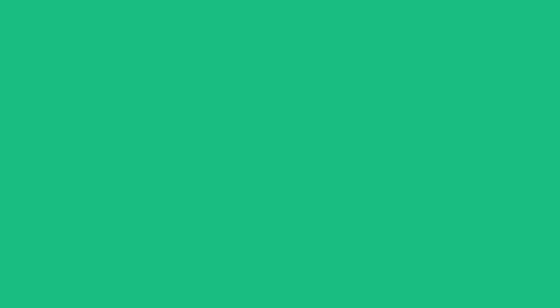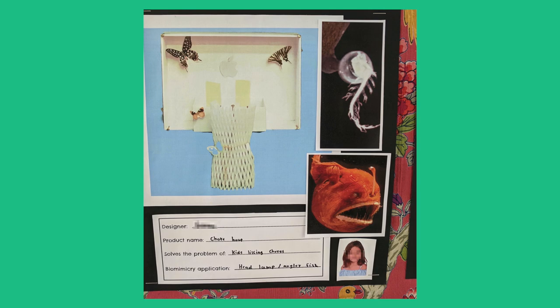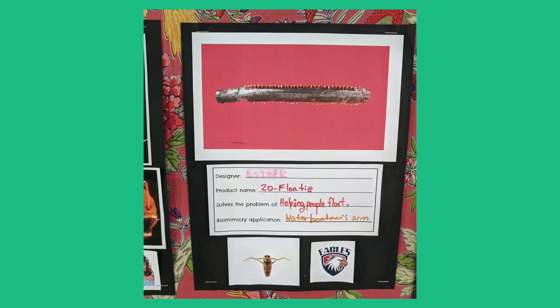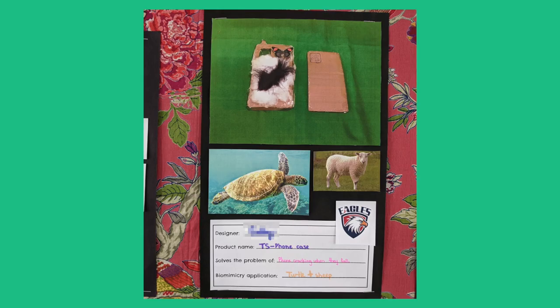Here are some of the items students created: a device that mimics a pelican's beak to scoop trash in rivers; a hoop containing lights that mimics the headlamp of an angler fish to attract and encourage the family to put laundry into the basket; a flotation device with small motorized paddles that mimic the legs of a millipede to move a person around a pool; another swimming device that mimics the hairs of the water boatman insect to float on the surface of the water; a device that mimics a bat's echolocation to alert people if they are not safe distancing; and a phone case with parts mimicking the hard shell of a turtle and the wool of a sheep to protect the phone when it falls.